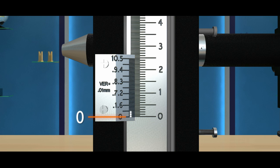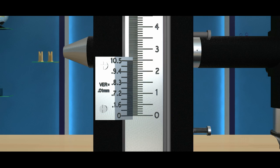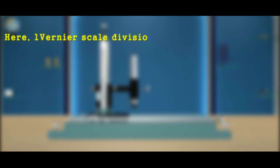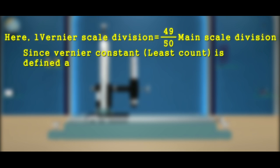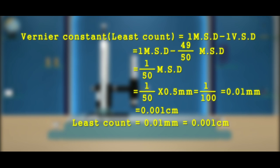Now let us see the least count of the travelling microscope. Here 50 divisions of the vernier scale is equal to 49 divisions of the main scale. So one vernier scale division is equal to 49 by 50 main scale divisions. Since the least count is defined as the difference between one main scale division and one vernier scale division, least count is equal to 1 main scale division minus 49 divided by 50 main scale divisions. That is equal to 1 divided by 50 main scale divisions. Least count is equal to 0.01 millimetres, that is 0.001 centimetres.